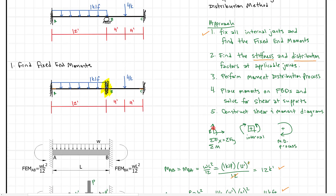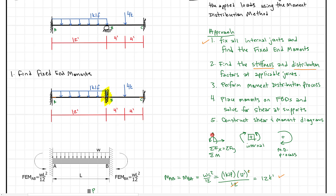So this is step two and we're complete with that. We found our fixed end moments and we found the stiffness and distribution factors. The next step is to do the moment distribution process in the next video. Click the link below and keep moving on. If you have comments, feel free to drop them — otherwise keep working hard, moving onward and upward.